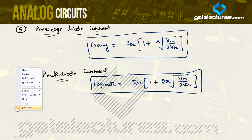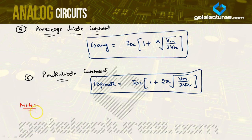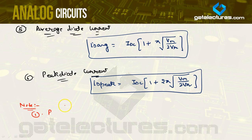Some important conceptual points: if RL is disconnected, the capacitor cannot discharge through RL and will retain its maximum value Vm. In a center-tap full wave rectifier, the PIV of the diode is generally 2Vm. Similarly, in the half wave rectifier with capacitor filter, when RL is disconnected the PIV was also 2Vm — that was a major drawback of using the capacitor filter with the half wave rectifier.